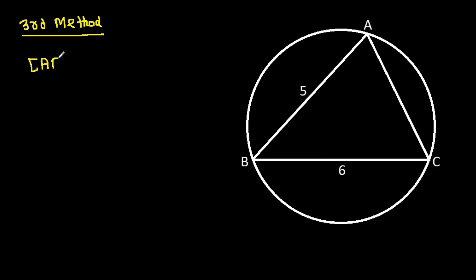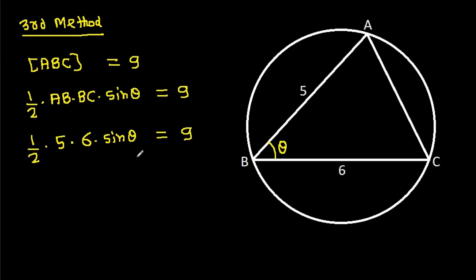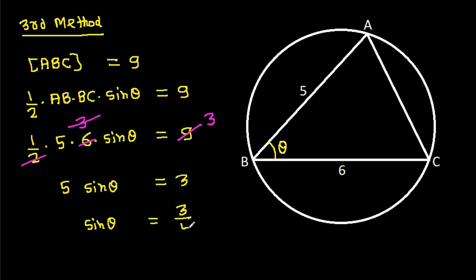We have area of ABC is 9. Suppose angle B is theta. Then area of ABC equals 1/2 times AB times BC times sin theta equals 9. So 1/2 times 5 times 6 times sin theta equals 9, giving 15 sin theta equals 9, so sin theta equals 3 over 5.